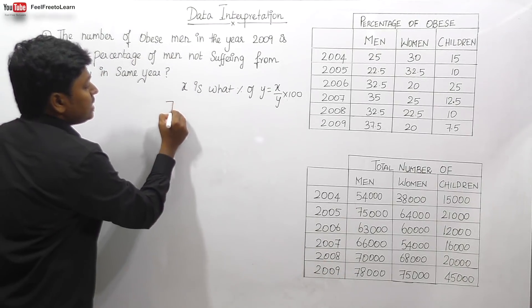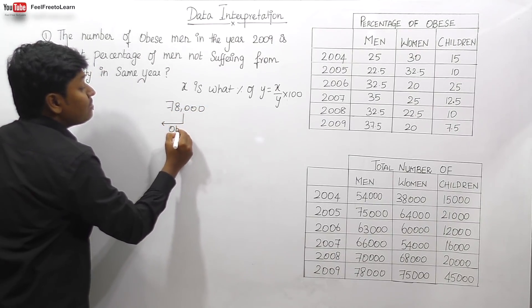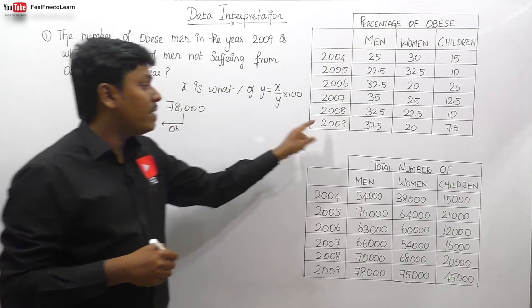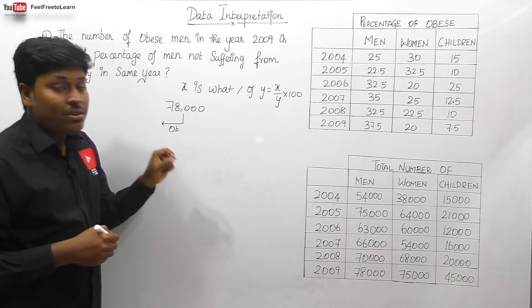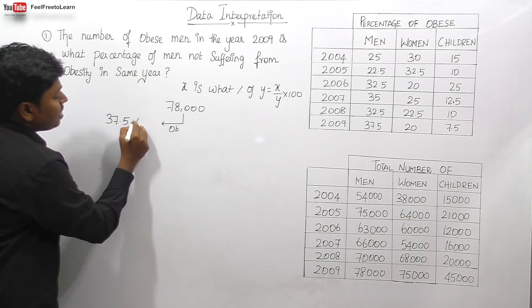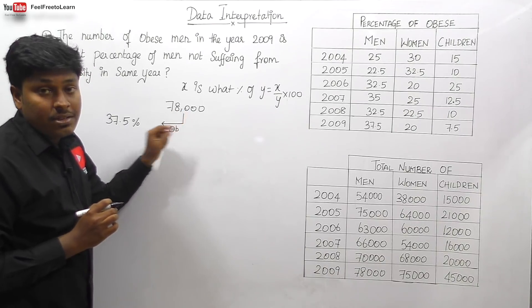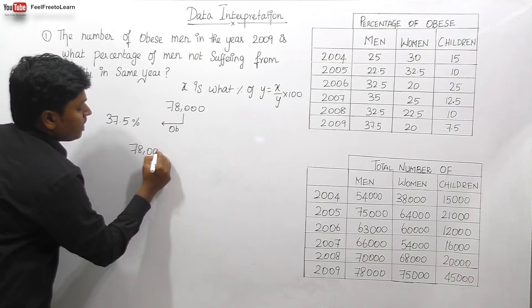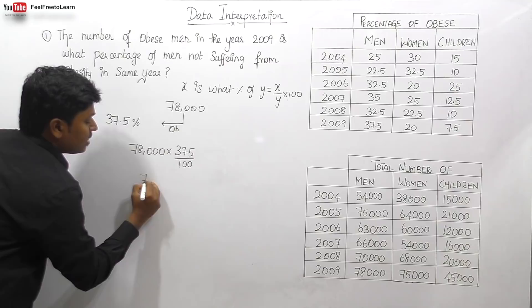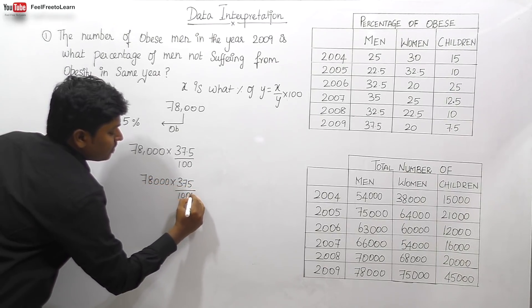In 2009, the total number of men is 78,000. Out of this, 37.5% of men are suffering from obesity in 2009. So I can say 37.5% of 78,000, which is 78,000 into 37.5 divided by 100. This can be written as 78,000 into 375 divided by 1000 — I'm just removing the decimal point.